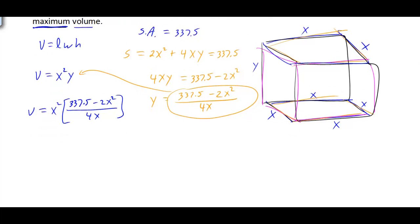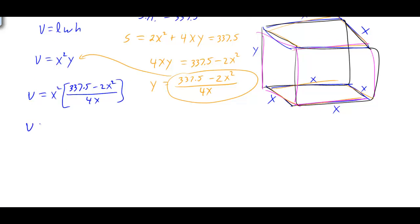We simplify before taking the derivative. X² divided by 4X reduces to X/4, so distributing gives us (337.5/4)·X − (2/4)·X³. That simplifies to V = 84.375X − (1/2)X³.